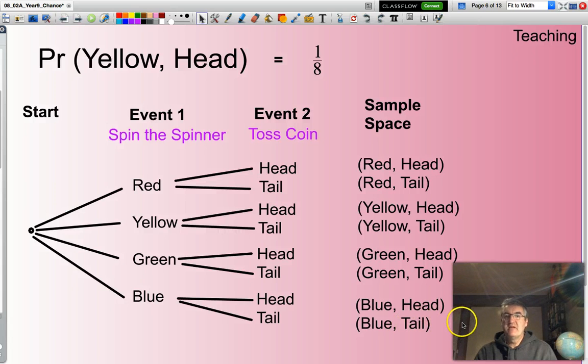That is a list of all the possible outcomes. And then, from that sample space, we look for the particular outcome that we are interested in.